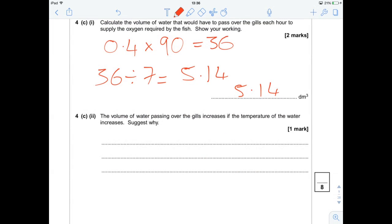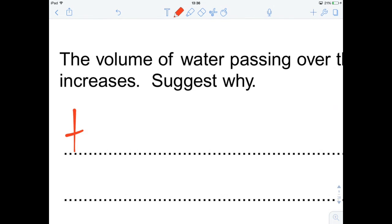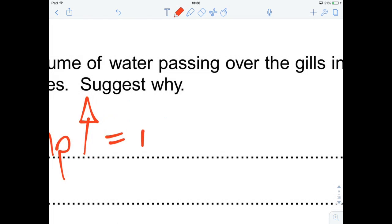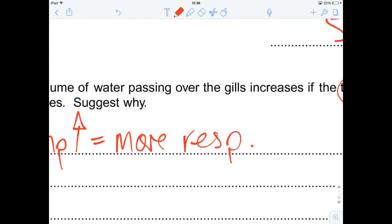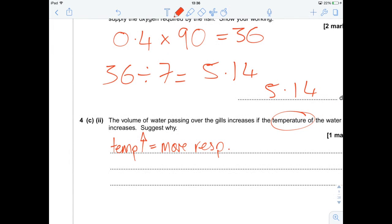The volume passing over the gills increases if the water temperature increases. Suggest why. I would be going for temperature increases enzyme activity and increases respiration rate. So basically, due to increased enzyme activity, we get a faster metabolism, which means our respiration rate is going quicker. And that's it for question 4C.